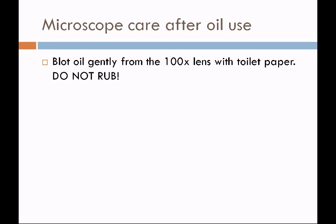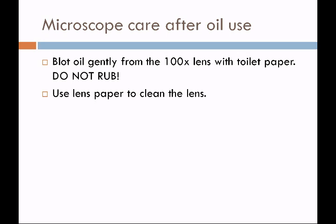After we use oil, it's very important to blot the oil gently from the 100x lens. We use toilet paper for this because lens paper is not very absorbent — but toilet paper will scratch, so use it very gently just to blot away any excess oil. After getting the oil off, use lens paper to clean the lens; you can also use some lens cleaner if the microscope was dirty. The oil lens is going to be the last thing you clean because you don't want to get oil on any other part of the microscope. Be sure that the oil lens is not protruding when you return the microscope to the cabinet.